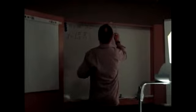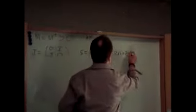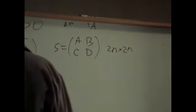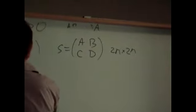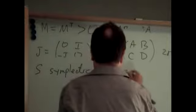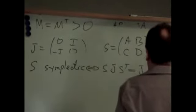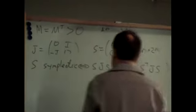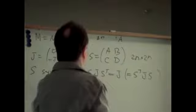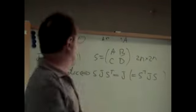Let's take a matrix, S equal to A, B, C, D, a 2N by 2N matrix, written in block form. The blocks have dimension N. Let's say that S is symplectic if, and only if, S J S transpose is equal to J, which is equivalent, actually, to saying that this is S transpose J S. So, this is the definition of a symplectic matrix.